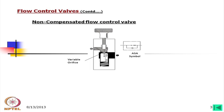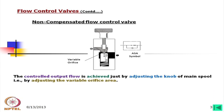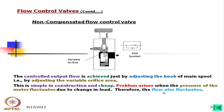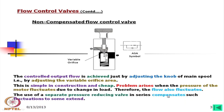An equation can be developed for such flow knowing the geometry of this orifice. The controlled output flow is achieved just by adjusting the knob, adjusting the variable orifice area. This is simple in construction, but a problem arises when the pressure of the motor fluctuates due to change in load, and therefore the flow also fluctuates. The use of a separate pressure reducing valve in series compensates such fluctuation to some extent.